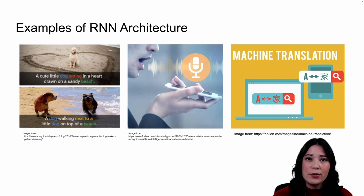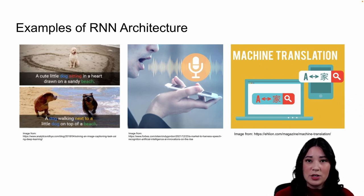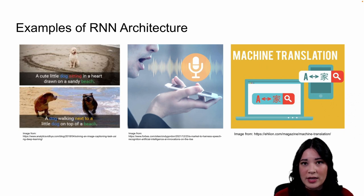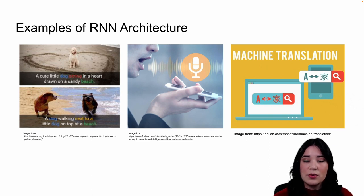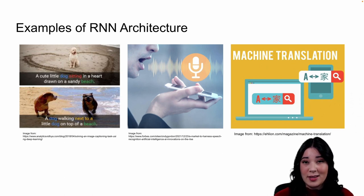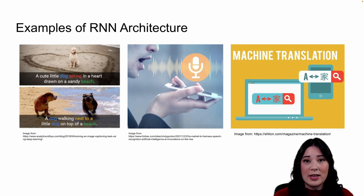Recurrent architectures in all three forms have been used to do some very cool things. One application is image captioning, where we take an image, input it into a network, and ask it to generate a caption — for instance, describing a cute little dog sitting in a heart drawn on a sandy beach. Recurrent architectures have also been used for speech to text; for example, Siri turns a sequence of sounds into a sequence of words. Another common application is machine translation, like Google Translate, where you input a sequence of words in English — like 'I like dogs' — and get back the same sequence in another language, such as 'j'aime les chiens.'